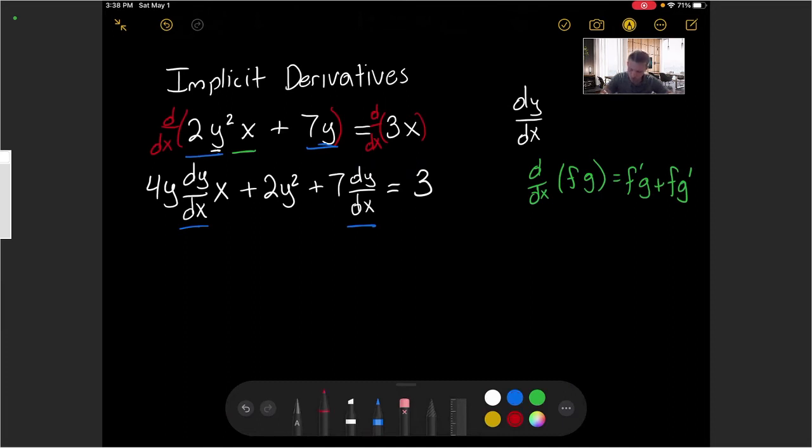Let's start by subtracting the non-dy/dx or derivative terms to the right side. So that would be subtract 2y² on both sides.